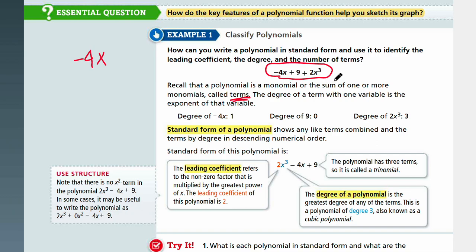The degree of the term with one variable is the exponent of that variable. So what does that mean? Look at negative 4x. The exponent of the variable is 1, so the degree of the first term is 1. Degree of 9, you do not have a variable, but if you were to have a variable, 9 would be equal to 9 times x to the 0th power. So the degree of the variable here is 0. Degree of the third term would be the 3 over here, because that's the power of the variable.